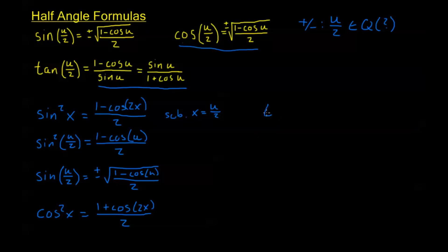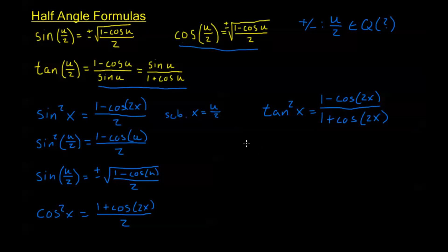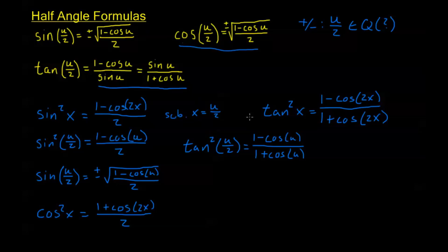Let's take a look at the lowering power formula for tangent: tangent squared of x is equal to 1 minus cosine 2x over 1 plus cosine 2x. Making the same substitution x equals u over 2, we have tangent squared of u over 2 equals 1 minus cosine of u over 1 plus cosine of u. We could take the square root of both sides and put a plus or minus in front, but we don't want to stop there — we want to get it to the simplest form without a square root.